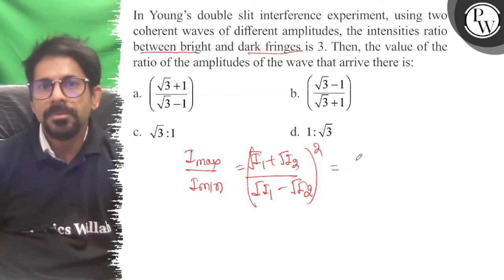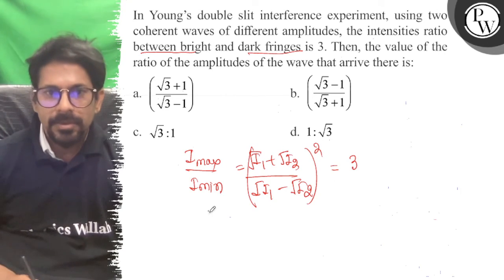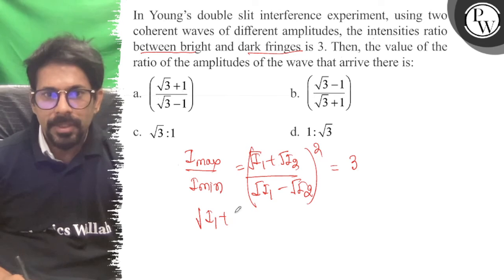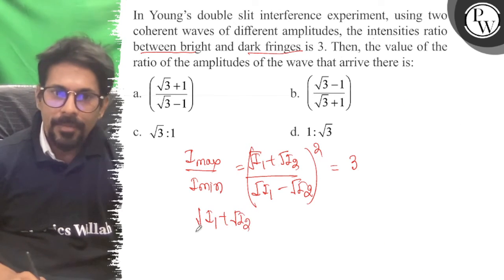That is equal to 3. So, (root I1 plus root I2) upon (root I1 minus root I2) equals root 3.